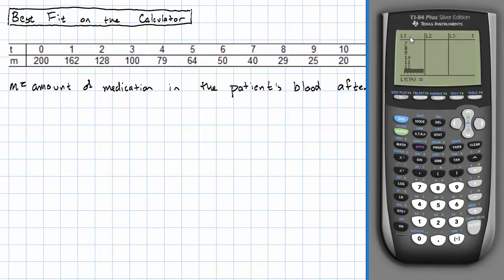So now I have all of my values of T entered in list 1. I'm going to hit the right arrow key to get to list 2, and I'm going to enter all my values of M in list 2. It's really important that I get the values of T and the values of M in the same order, and I don't skip anything because the calculator is going to pair them up by looking at which numbers are in the same row.